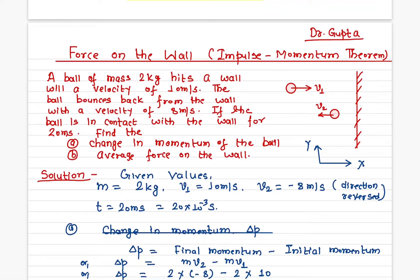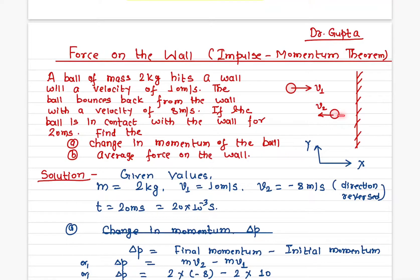In this problem we'll calculate the average force that a ball will impart to a wall. A ball whose mass is 2 kilograms is moving with 10 meters per second, hits the wall, and bounces back with a velocity of 8 meters per second. The ball is in contact with the wall for about 20 milliseconds. We need to find the change in momentum and the forces involved, using the impulse-momentum theorem.